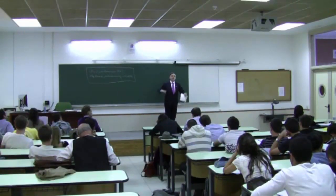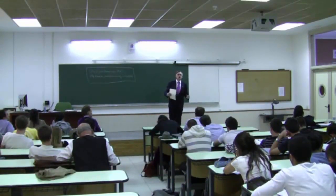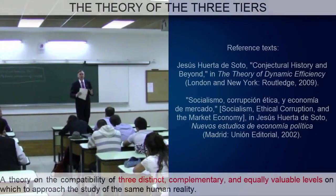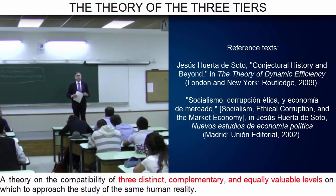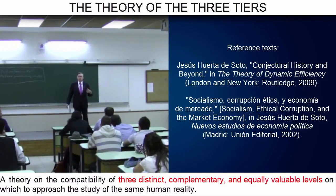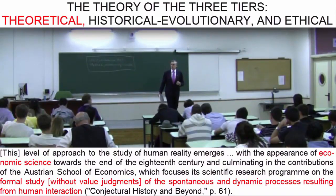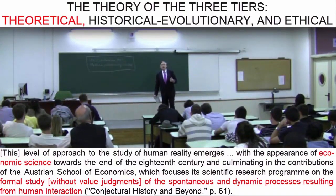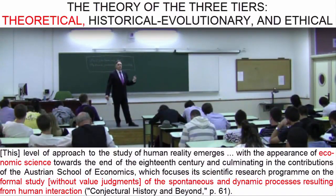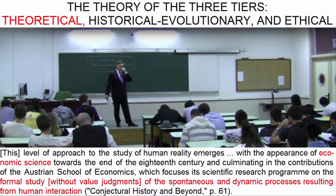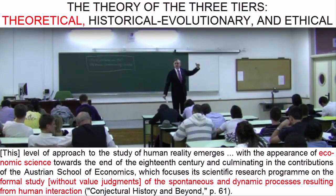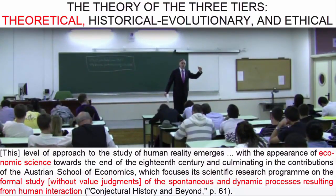Wishing to present an overall view of all of the possible approaches to the study of social phenomena, I developed what is now known as the theory of the three-tiered approach. The first of the three tiers or levels on which the social phenomena that surround us can be examined is the scientific tier, which rests on the laws of economic science and is free of value judgments. We have devoted our effort to it in all of our classes throughout this course. We could call this level the theoretical level.